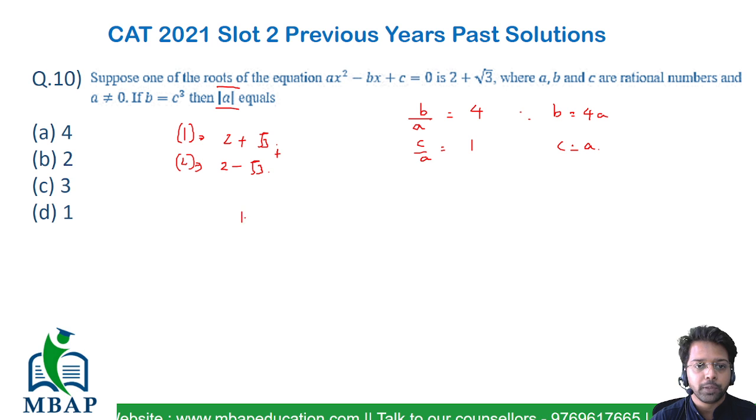They've also given us b = c³. So substituting b = 4a and c = a, we get 4a = a³.